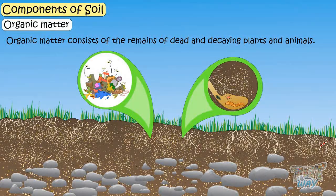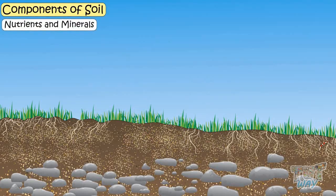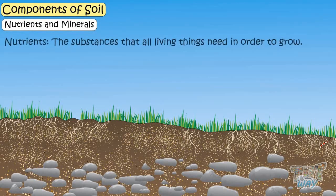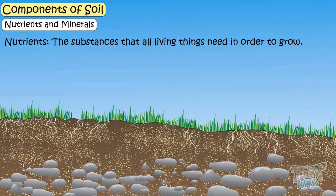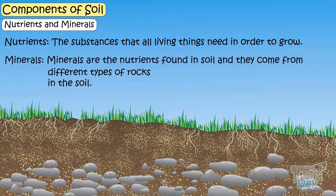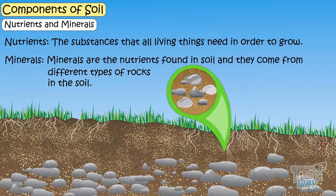Then are nutrients and minerals. Nutrients are substances that all living things need in order to grow. Minerals are the nutrients found in soil, and they come from the different types of rocks in soil.